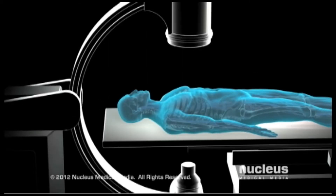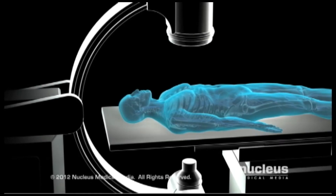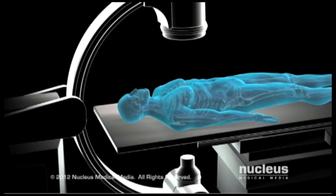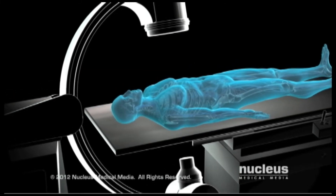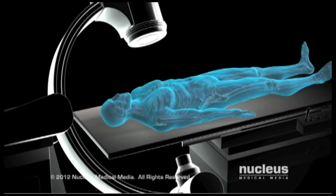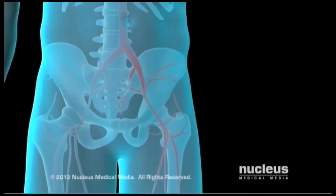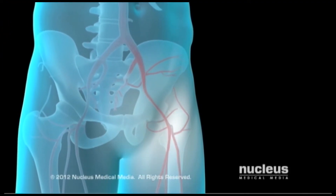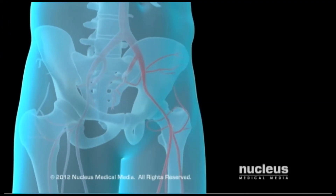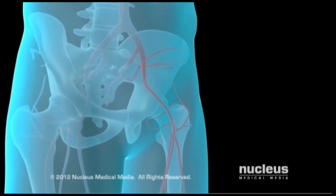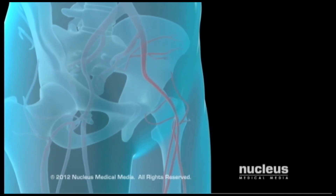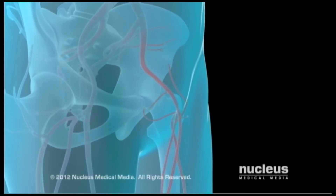To begin the procedure, you'll be placed on a table equipped with a fluoroscope. A fluoroscope is capable of taking x-ray images of many parts of the body from multiple angles. Your doctor will numb your skin around where the catheter is to be inserted. Since the arteries of the leg are most easily accessed, the femoral artery in the groin serves as the insertion site in most cases.